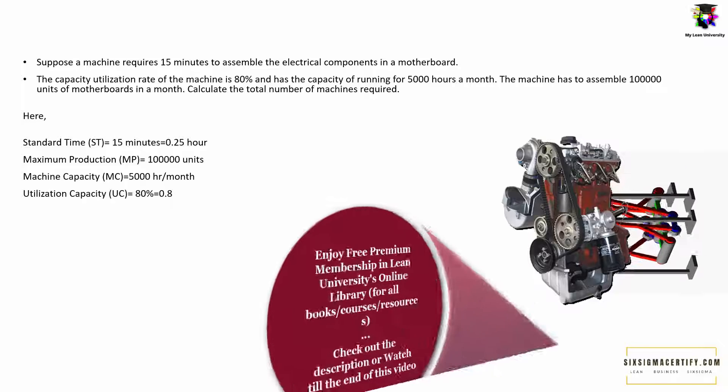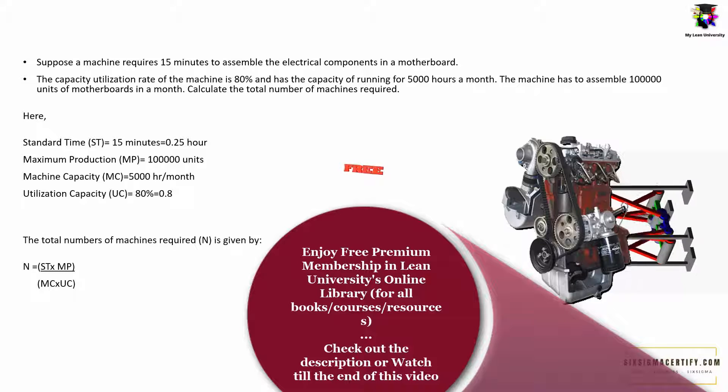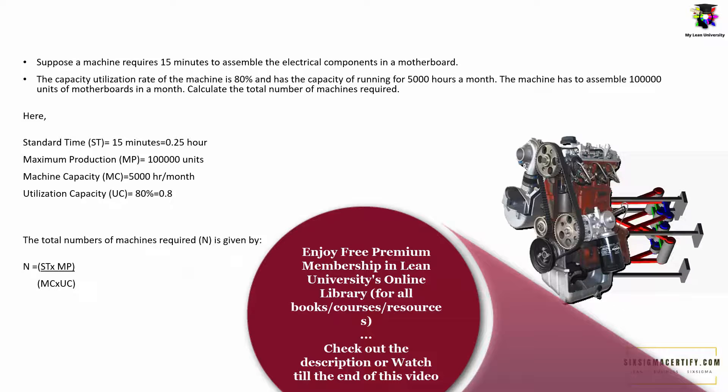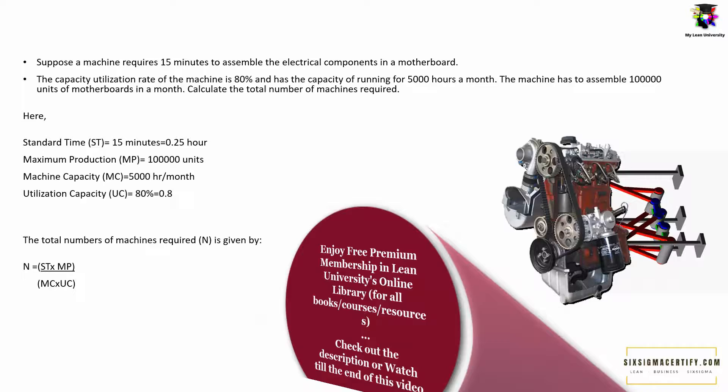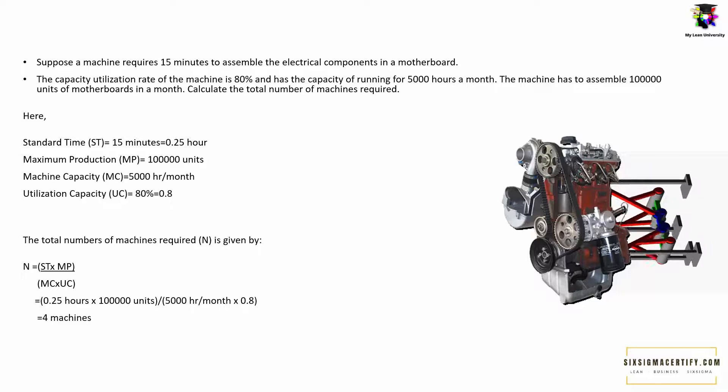So we have to convert the percentage into decimal form. So the total number of machines required or N, as we learned before, is given by ST or standard time times the MP or maximum production divided by MC or the machine capacity times the UC or the utilization capacity, which is 0.25 hours times 100,000 units divided by 5000 hours per month times 0.8 or 80%, which gives us 4 machines.